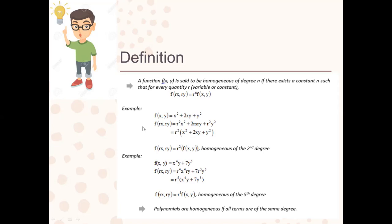You may also check homogeneity by simply inspecting the degree of each term. The first term x² is second degree; the middle term 2xy is also second degree (x to the 1st and y to the 1st); and the last term y² is second degree. If all terms have the same degree, the function is homogeneous. If one term is, say, third degree while others are second degree, the function is non-homogeneous.